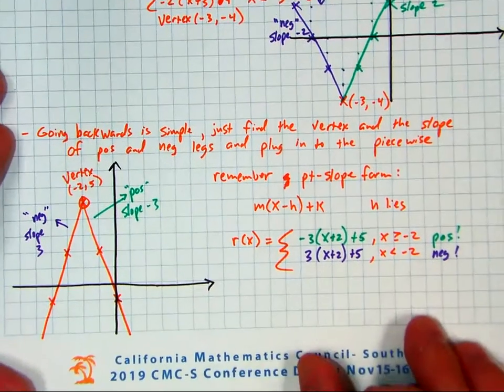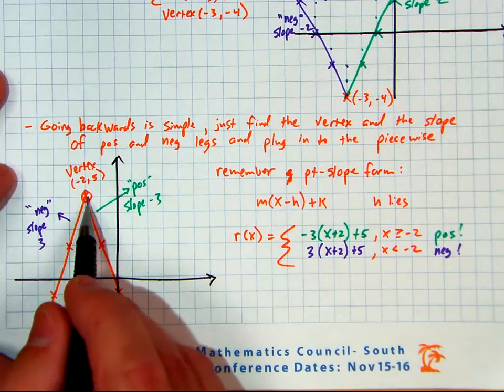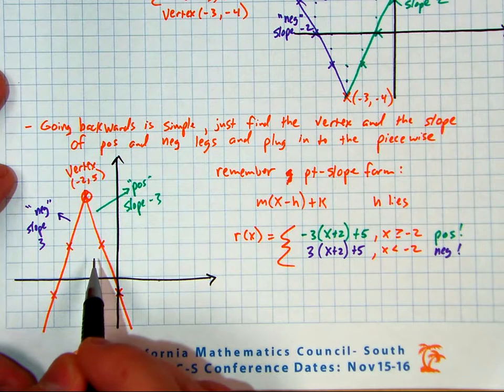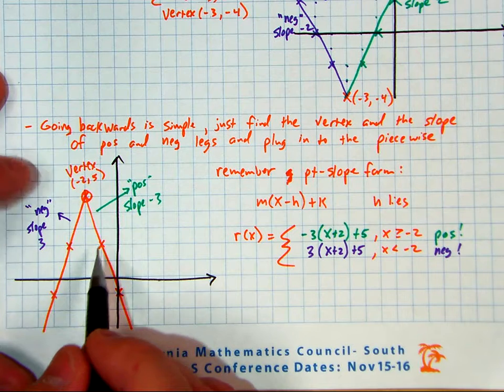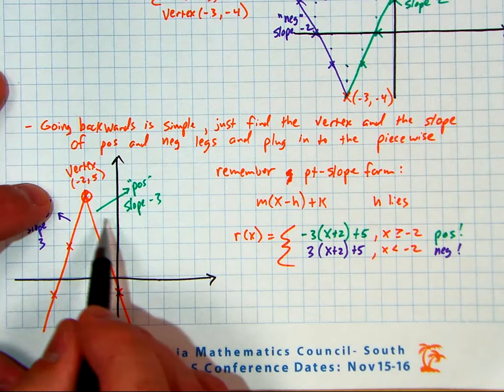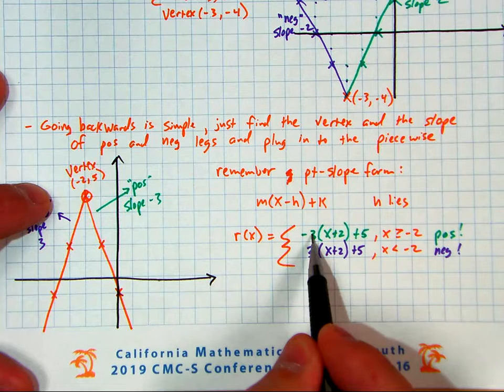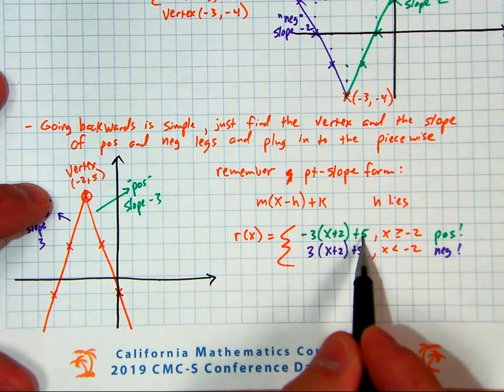Let's say they give you the graph so you can find the vertex, and you can count dots or count grids on the graph to find out what the slope is. The positive side is negative 3 slope that goes up here on top, along with h and k in the vertex.